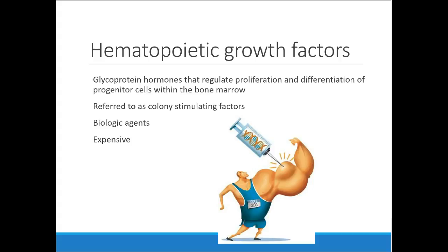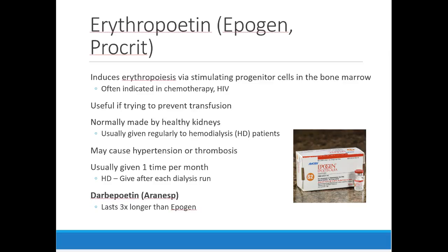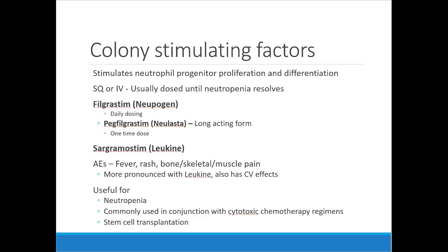Growth factors are glycoprotein hormones that regulate proliferation and differentiation of progenitor cells from the bone marrow. They're used for patients with low hemoglobin who don't necessarily need a transfusion but need a hemoglobin boost. Erythropoietin (epogen) is normally made by healthy kidneys, so these synthetic products are mostly reserved for patients with kidney insufficiency. They work just like our endogenous erythropoietin to induce erythropoiesis via progenitor cells in the bone marrow. Colony stimulating factors won't be covered — that slide is being removed.